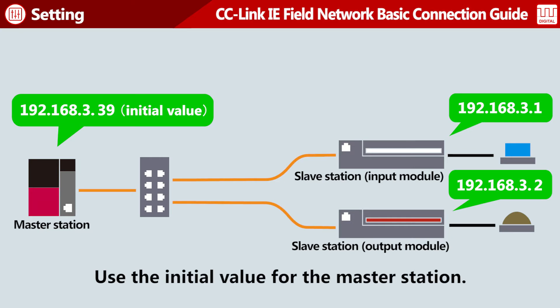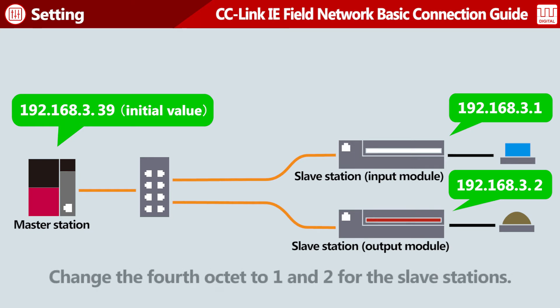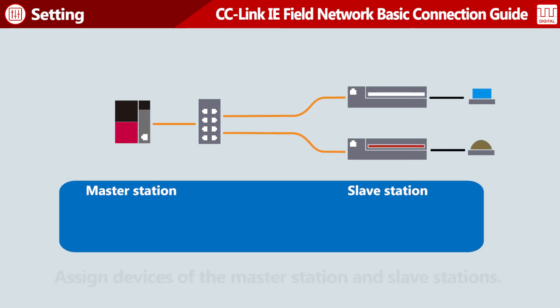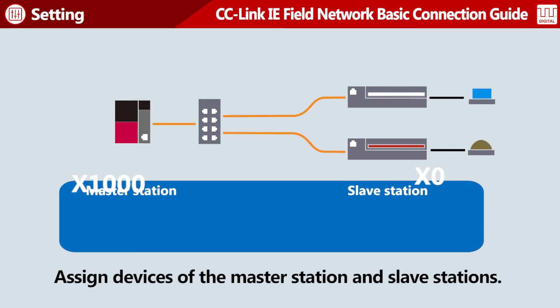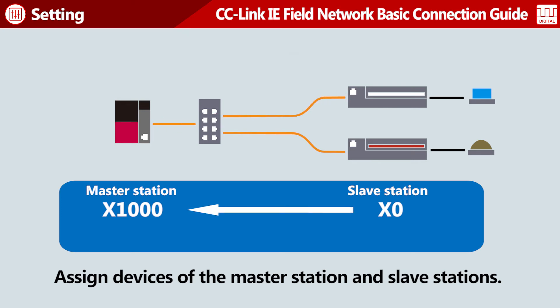Set the IP address initial value shown here to the master station. Change the fourth octet of the IP address set to the master station to 1 and 2, and set them to the slave stations. Assign devices of the master station and slave stations to exchange I/O signals.